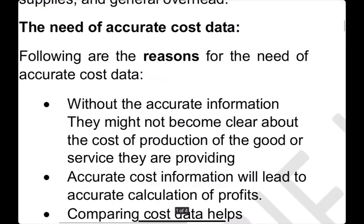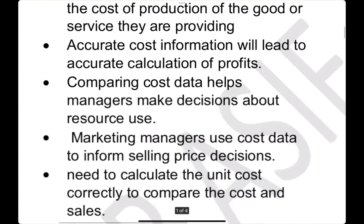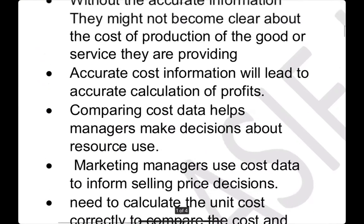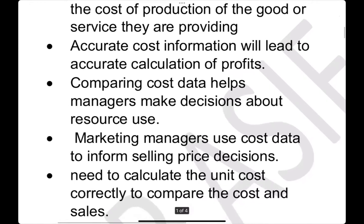सबसे पहले accurate cost information इसलिए चाहिए कि हम clear कर सकें कि हमारी cost of production क्या है, हमने product कितने की बनाई है। अगर हम accurate cost calculate कर लेंगे तो हम selling price decide कर सकते हैं, दूसरे businesses से compare कर सकते हैं। Unit 3 में cost-based selling price पड़ी हुई है — cost में markup add करके selling price निकालते हैं।